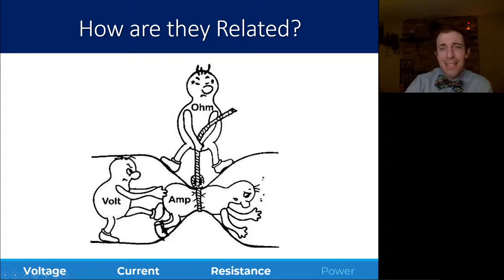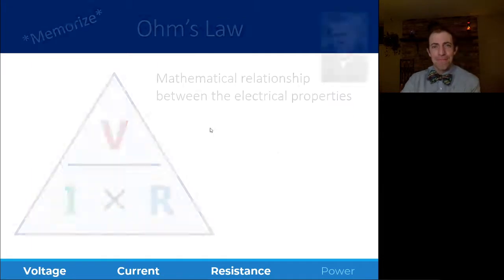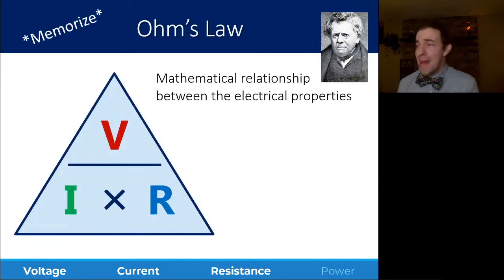Resistance in ohms is making it harder for them to flow. So, the larger the resistance, the slower the push. And you can see that relationship here in this sort of cartoon.